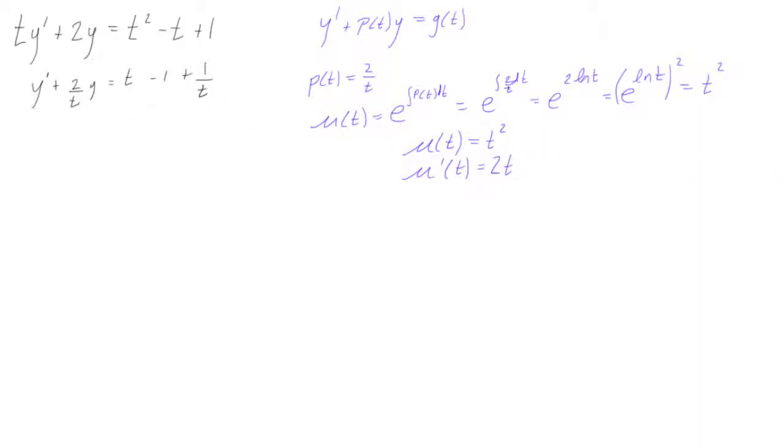Okay, so we can go back and plug this into our equation now. So what we want to do is we want to multiply everything, every term in our equation, or we want to multiply both sides by our integrating factor, μ(t), and μ(t) is equal to t squared.